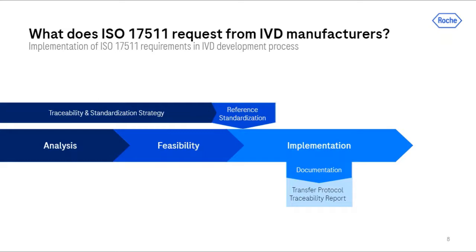In order to implement and fulfill all requirements of ISO 17511 during the development of an IVD device, the strategy for traceability and standardization has to be assessed in the process. The first validation lots produced after the feasibility phase have to undergo the so-called reference standardization, in which the traceability and value assignment is fixed. It is also checked whether the standardization process allows a feasible and consistent routine procedure, and the value assignment of all following lots will originate from this initial reference standardization. The defined calibration hierarchy is documented in a transfer protocol and a traceability report.